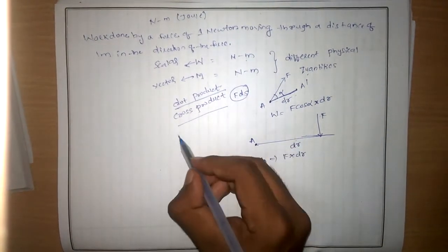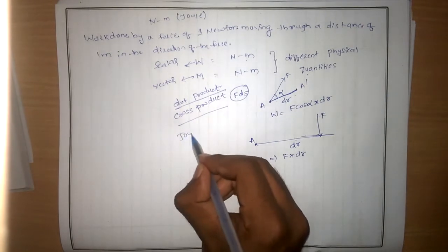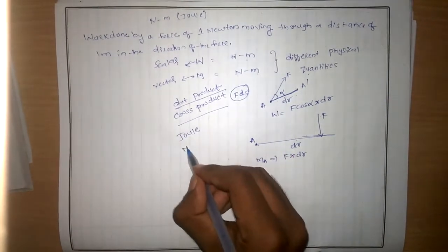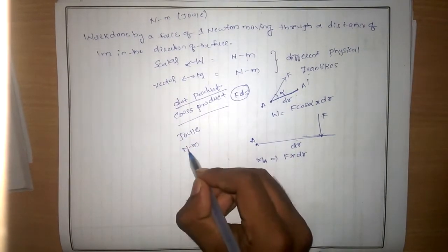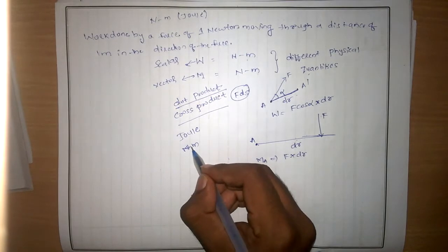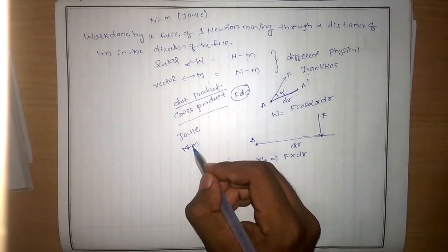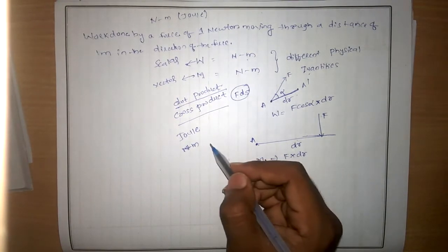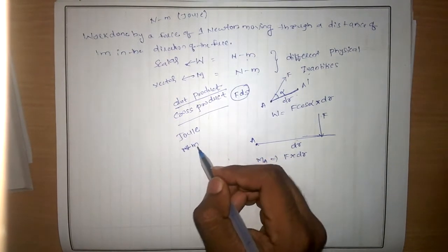Therefore, the unit of work is Joule, and the unit of moment is Newton meter. They are different physical quantities — we should know that.